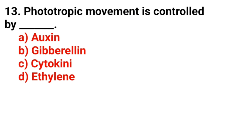Question 13: Phototropic movement is controlled by which of the following? Answer option A: auxin.